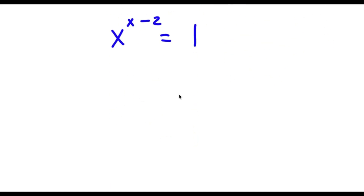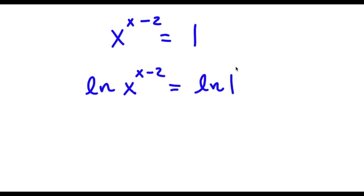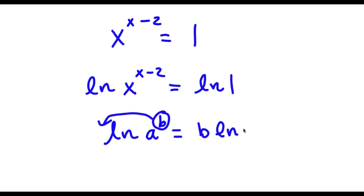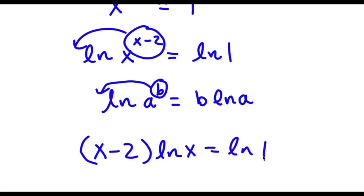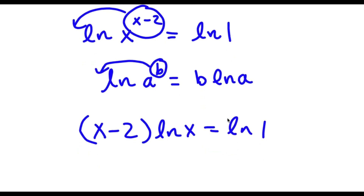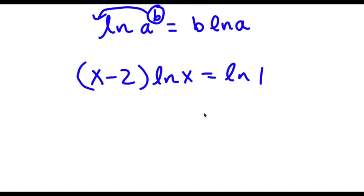Now I'm going to take the natural log on both sides. So I have ln of x to the power of (x minus 2) is equal to ln 1. Using the rule that ln(a^b) equals b times ln(a), I can move (x minus 2) to the front: (x minus 2) times ln x equals ln 1. Since ln 1 equals 0, I now have (x minus 2) times ln x is equal to 0.